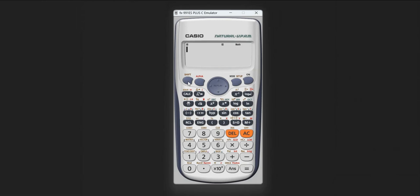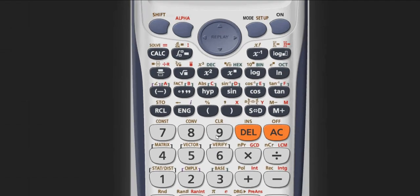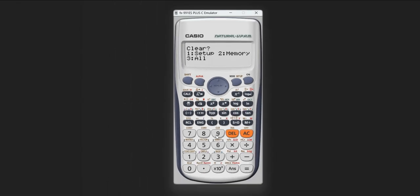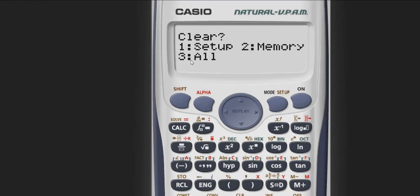After pressing the shift key, you have to press the number 9 key. Let's press it. Then this menu will appear, and at this time you have to press number 3 for erasing all the setups and memory.